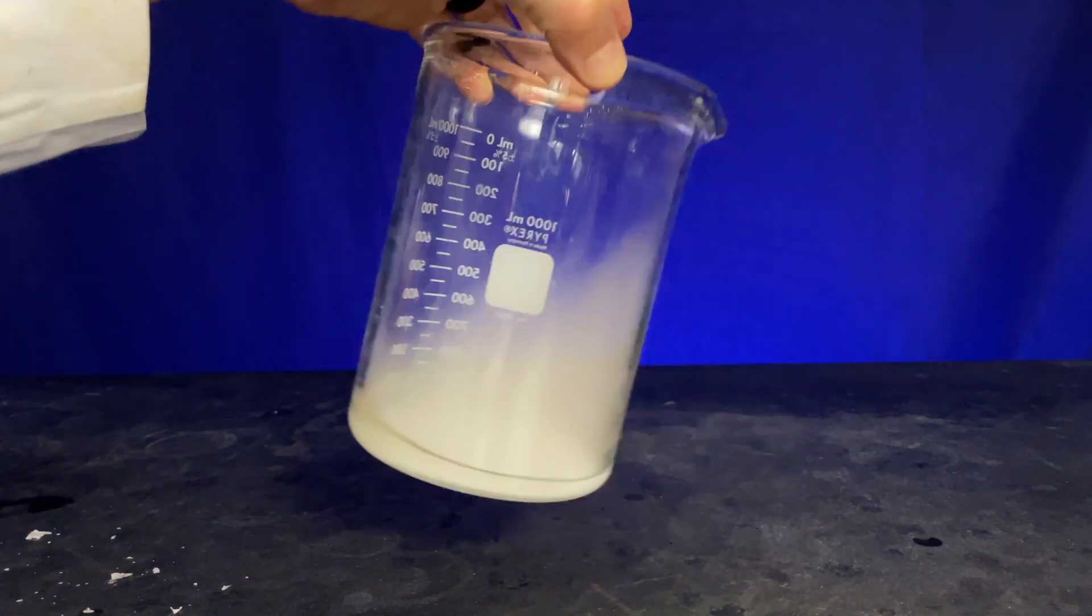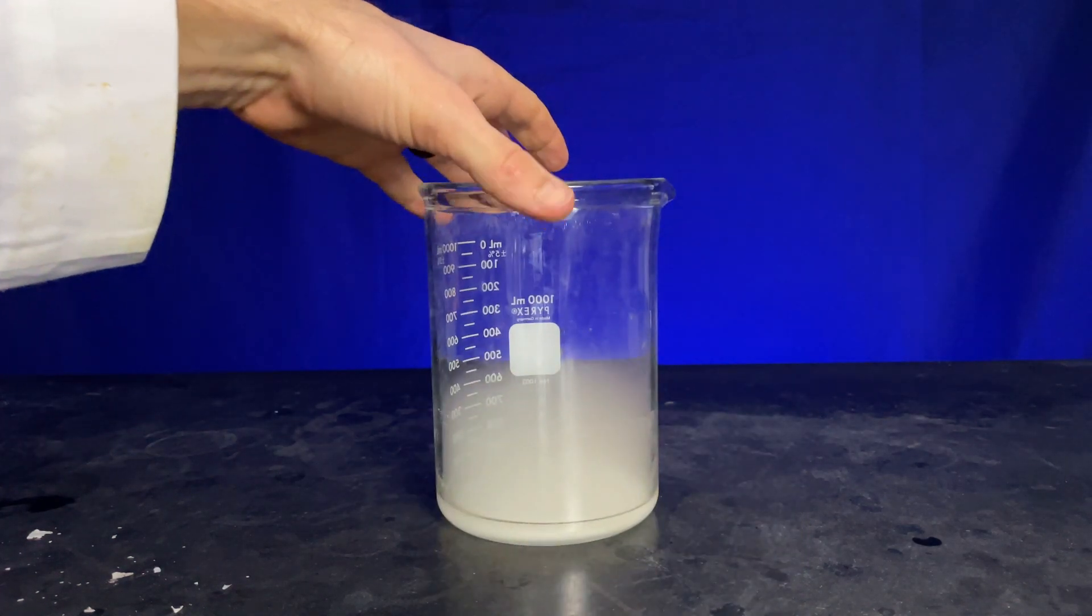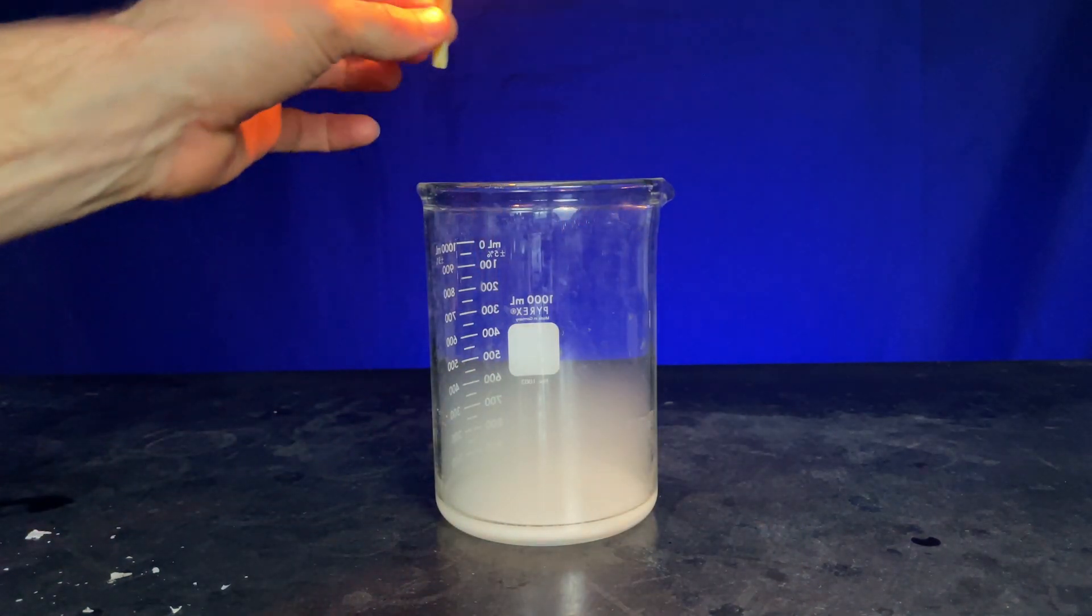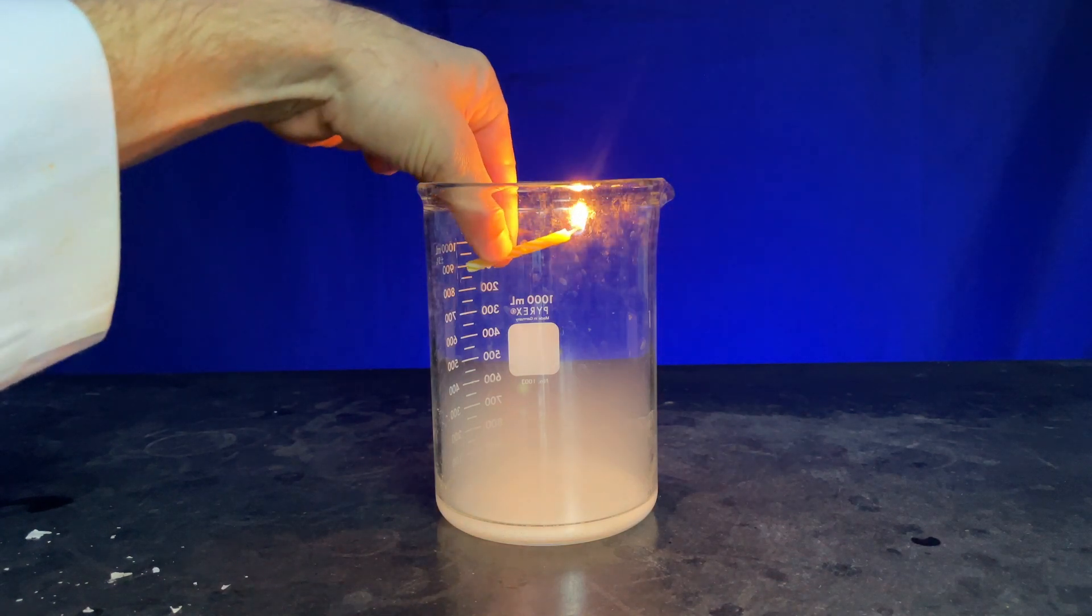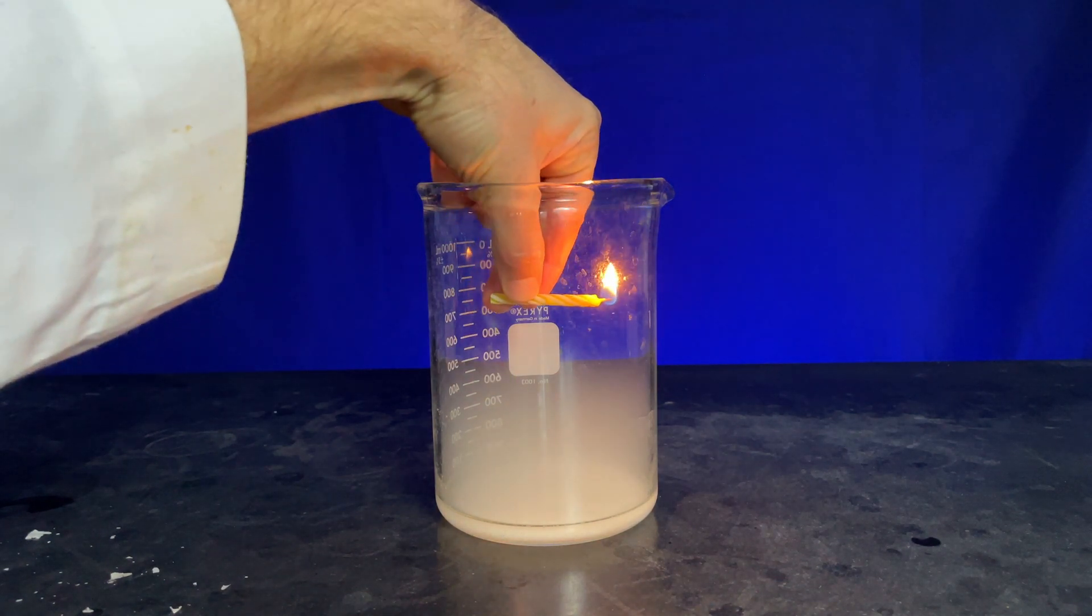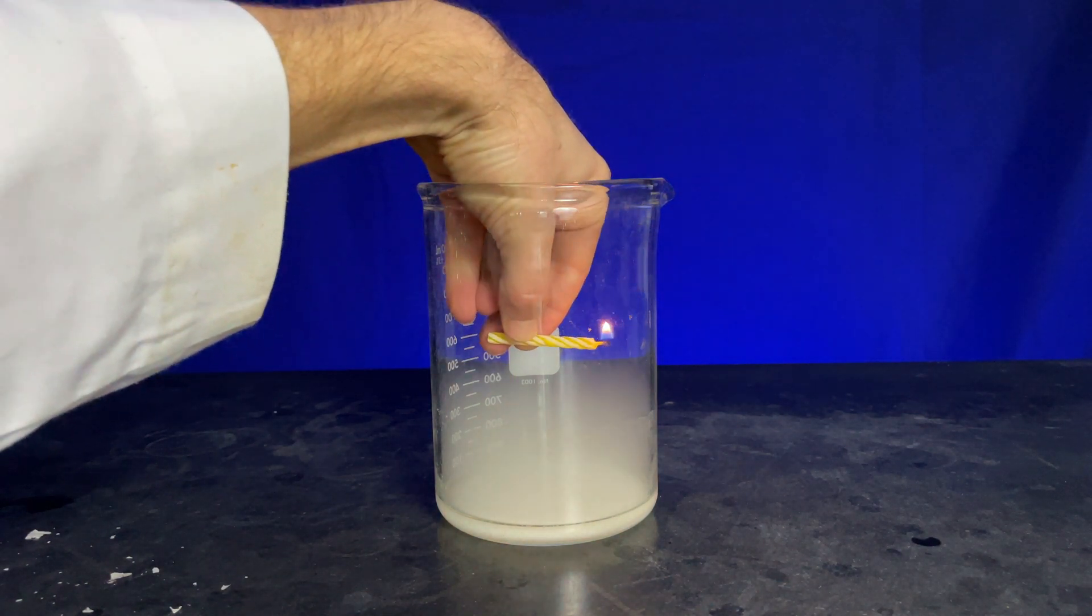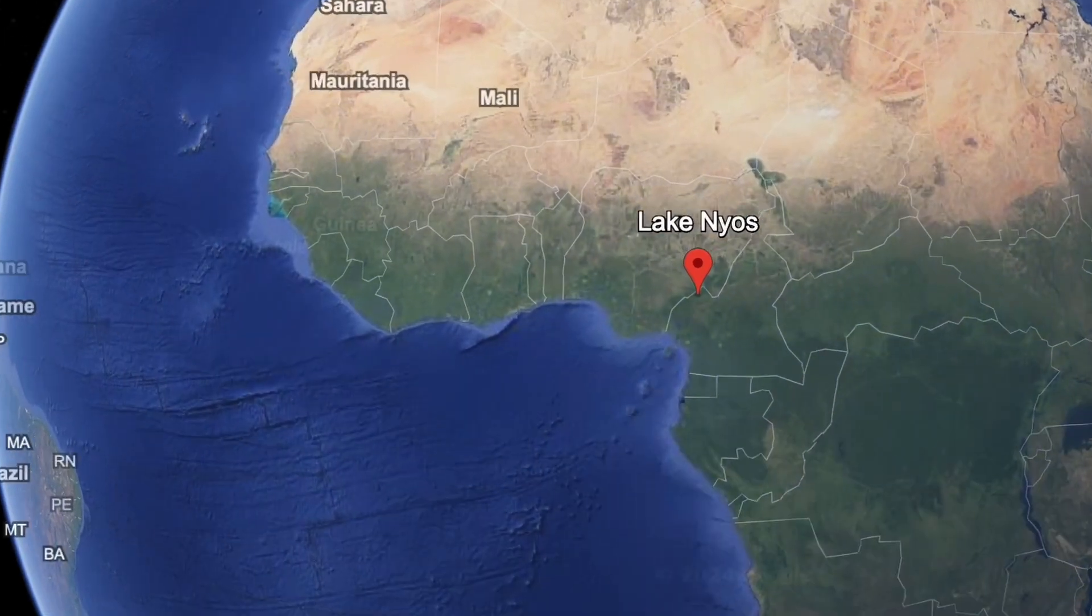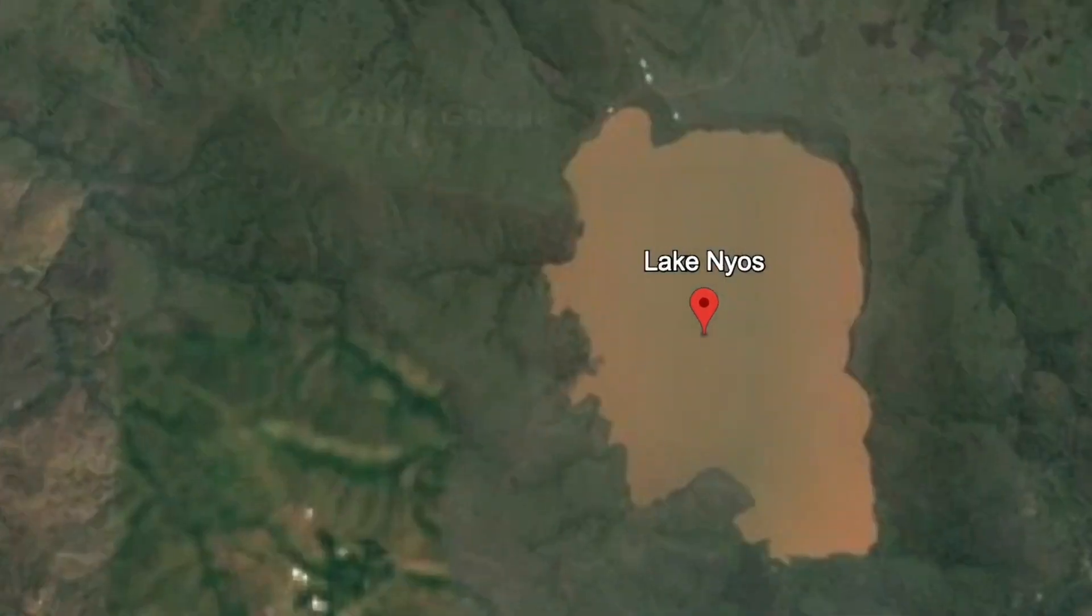And this more dense CO2 is, again, the big problem that happened around Lake Nyos. If we take a candle now and light it, we can see that when it gets to that smoke that is the CO2 region, it immediately goes out. CO2 extinguishes the flame. This is exactly what happened in the villages surrounding Lake Nyos.